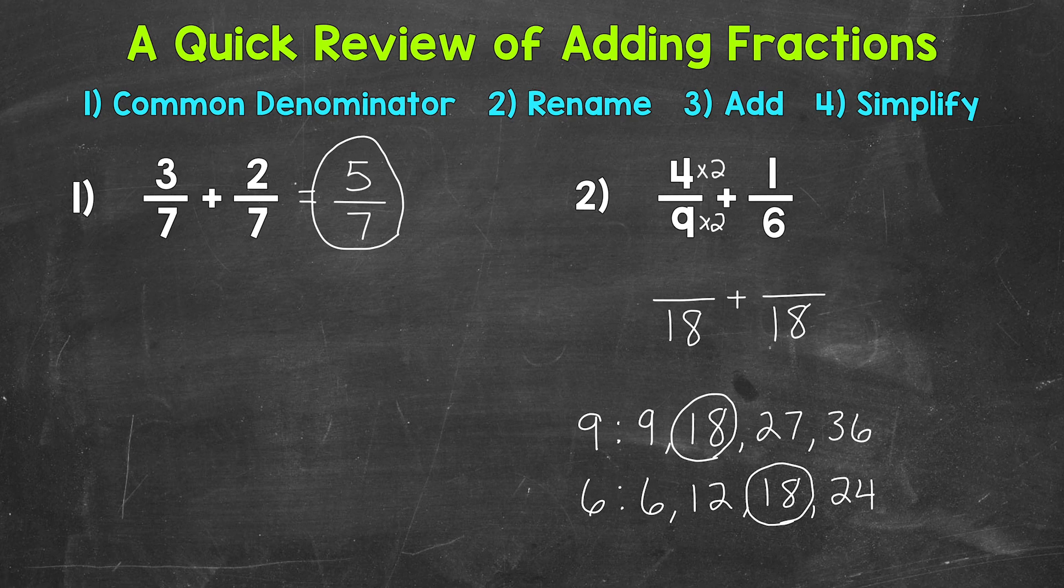Let's add our numerators. 8 plus 3 is 11. And then we keep our denominator of 18 the same. Always look to see if you can simplify. 11 18ths, the only common factor between 11 and 18 is 1. So we are in simplest form. And this is our final simplified answer. 11 18ths.